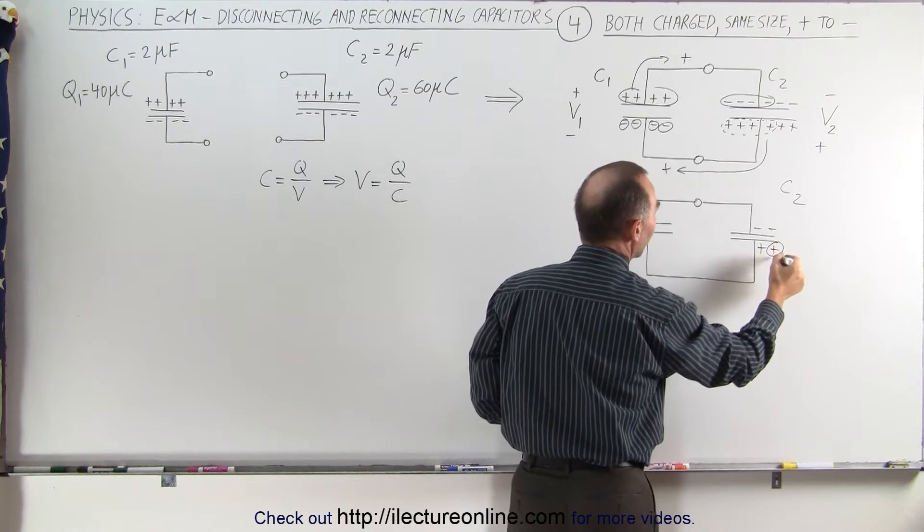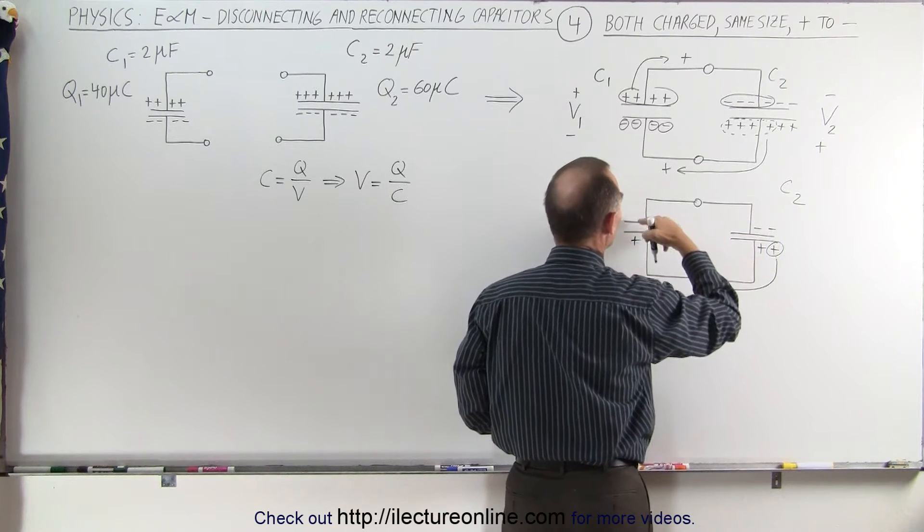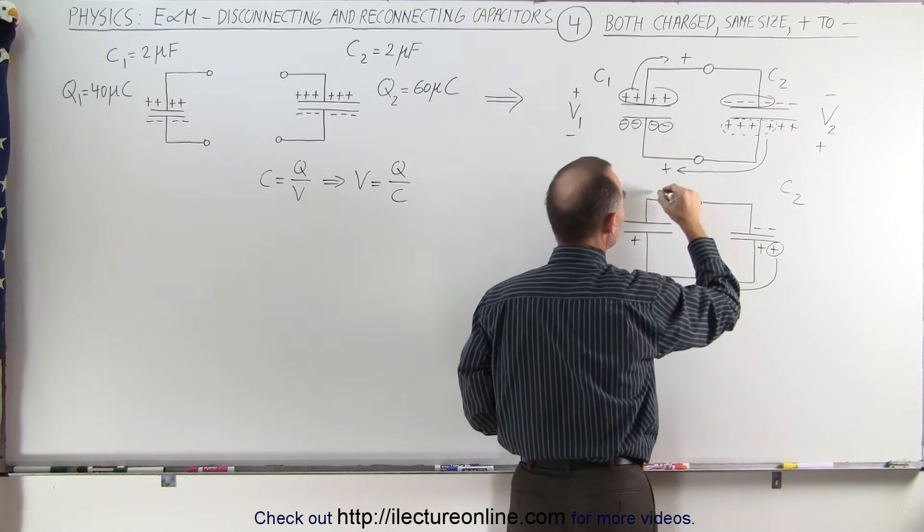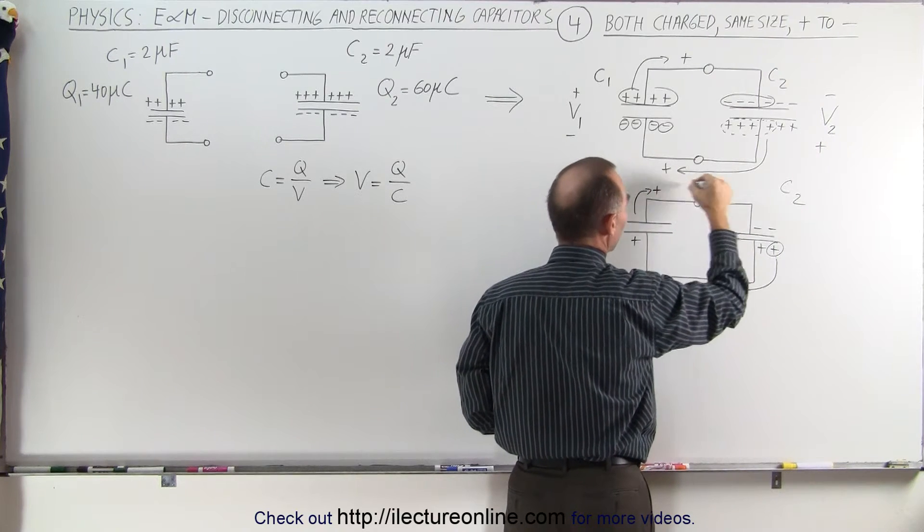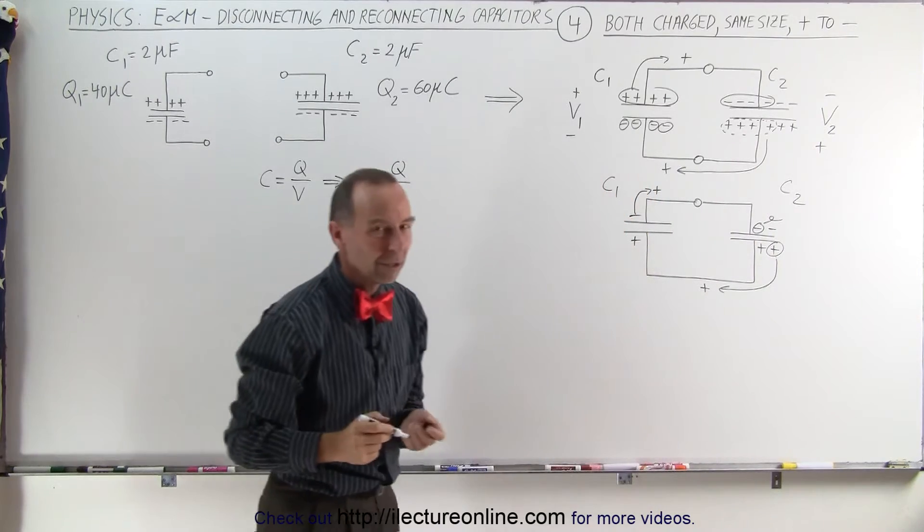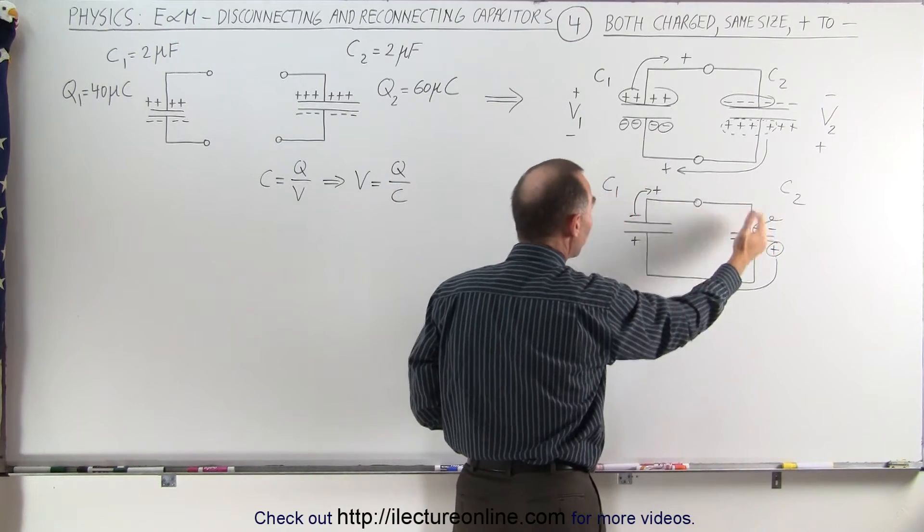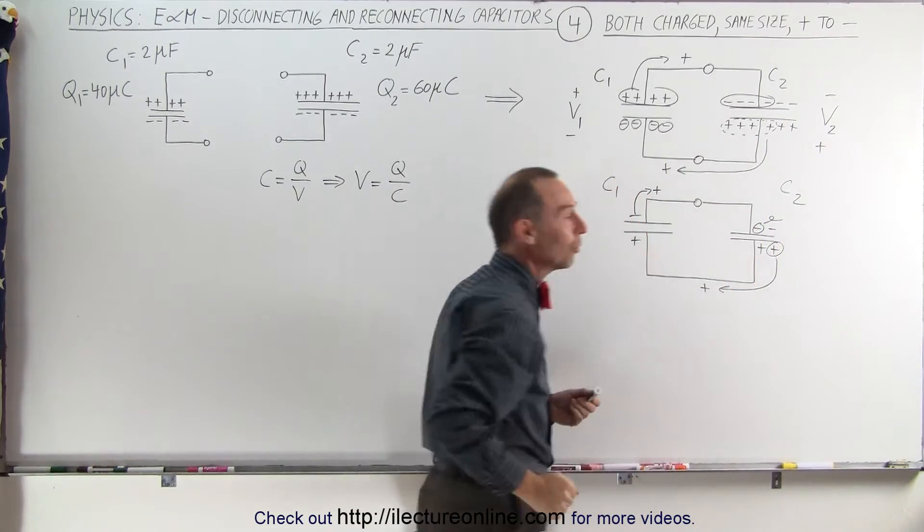You'll end up with something that looks like this, where this positive charge moves in this direction, causing a positive charge to be moved in this direction. It will repel a positive charge and negate one of those negative charges, so this side becomes negative. Since they're the same size, you'll end up with the same charge on both sides.